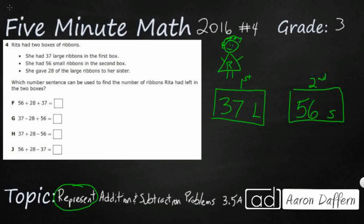And then she gave 28 of the large ribbons to her sister. So here's the big key. What are we doing with this 28? If you look at all of your answer selections, F, G, H, and J, they all include the three numbers, 37, 56, and 28. They just do it in different order, and they use different operations.